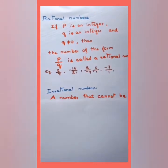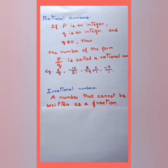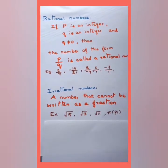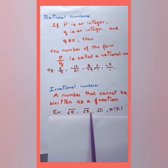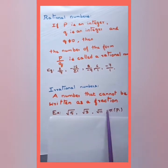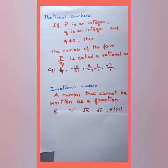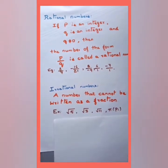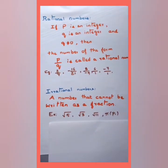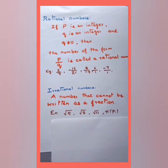Next we move to irrational numbers. A number that cannot be written as a fraction is called an irrational number. Examples include √5, √3, √11, and π. I'm moving a little fast because all these concepts have been learned in previous classes — this is just to help students recall and prepare for exams.